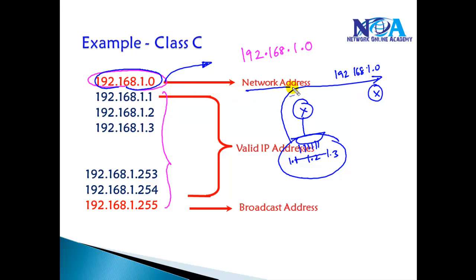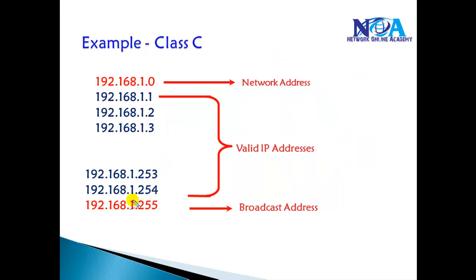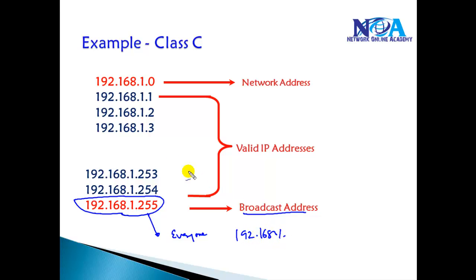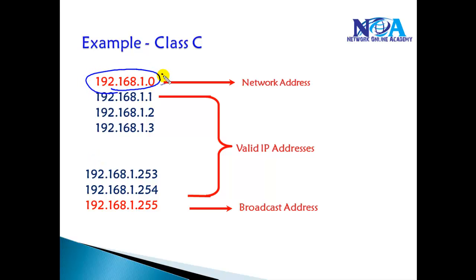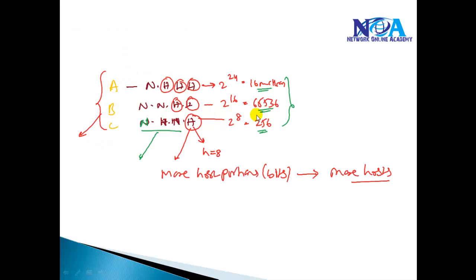Similarly, we cannot use the last address of the range — that is called the broadcast address. When you want to send information to all devices within the network, you use the last address of the range, the broadcast ID. Sending to this address delivers the data to all devices in the network. So the first address is reserved for identifying the network and the last for broadcasting — neither can be assigned to any device.